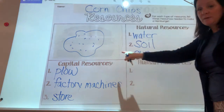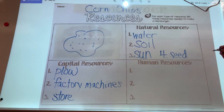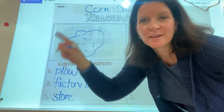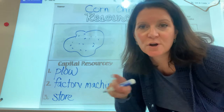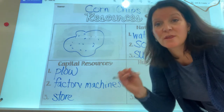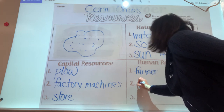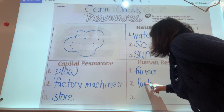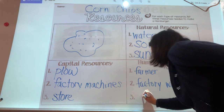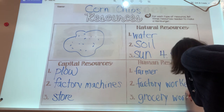Moving over to the human resources used to get us that corn chip. Human resources — people, humans, the farmer, the factory worker, the grocery store worker. Those are all human resources: the people that do the work. So we have the farmer, we have the factory worker, and we might have the grocery store worker — like who unloads it, loads it, checks us out. Grocery worker.